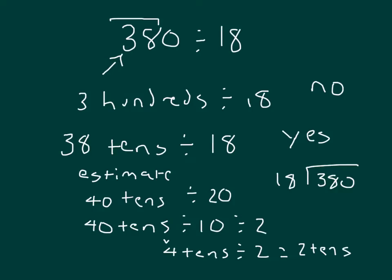That's why we regrouped it, and we went 18 into 38, or those 38 tens. We said it could go in 2 whole times, for 2 times 18. That was from our estimate. It's 36, and that does work. 38 minus 36 is 2.